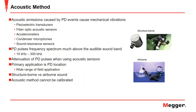The acoustic measurement method detects PD events through mechanical vibrations using piezoelectric transducers, fiber optic acoustic sensors, accelerometers, condenser microphones, or sound resonant sensors. The frequency spectrum of PD pulses is much above the audible sound band, ranging from 10 kHz to 300 kHz. Similar to the electromagnetic method, attenuation of the PD pulses is a real issue with acoustic sensors, dependent on frequency, geometry, reflection, refraction, conductor material, and physical boundaries.